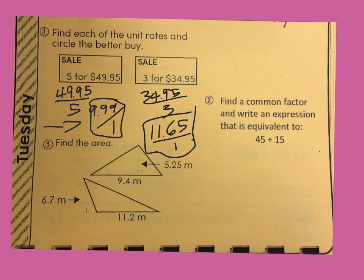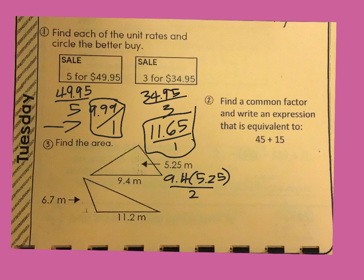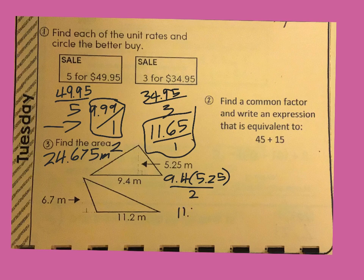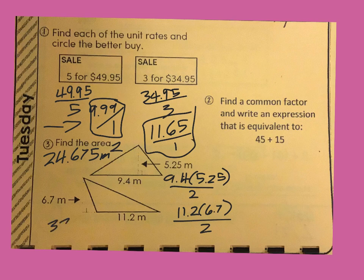Next, it wants us to find the area of both triangles. We're going to use base times height divided by 2. On the first one: 9.4 times 5.25 divided by 2 gives us 24.675 meters squared. On the next one: 11.2 times 6.7 divided by 2 gives us 37.52 meters squared. Those are the two answers for that one.